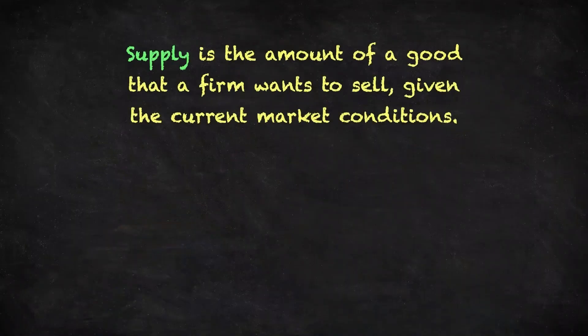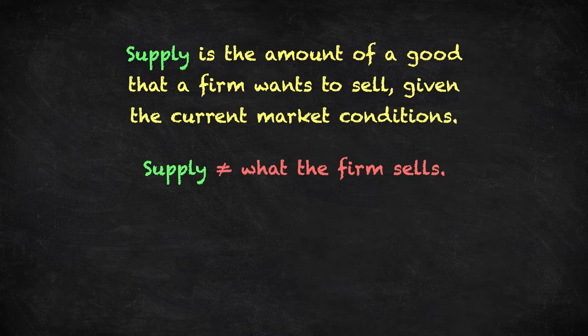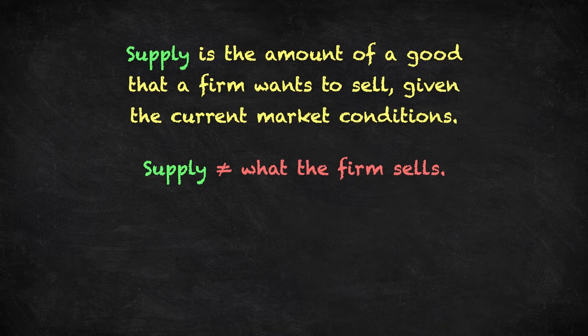When we talk about supply, we mean the amount of a good that a firm wants to sell, given the current market conditions. Notice that supply is not necessarily equal to what the firm actually sells. It may want to sell a lot more than it's currently able to, but perhaps consumers are not so interested in the product at its current price. Supply is the quantity the firm wants to sell.